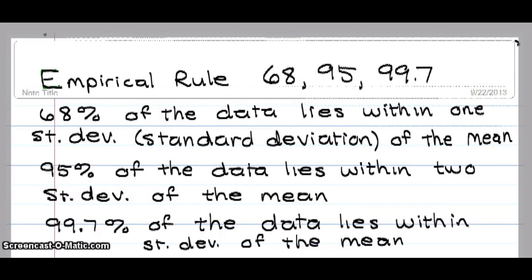Welcome to the Empirical Rule. 68, 95, 99.7. Those are the key numbers.